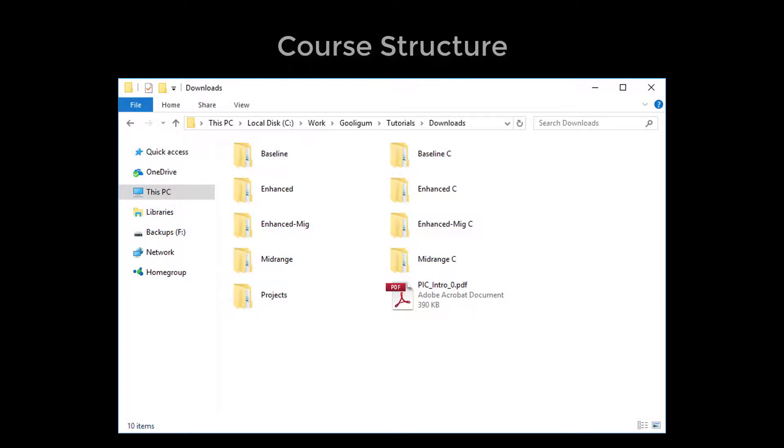If you've bought the full set of tutorials, or the Gooligum PIC training board, there are a lot of files to download, which, after you've extracted them, are organized into a lot of folders, each containing a series of lessons. Confusing, isn't it? Where to make a start?